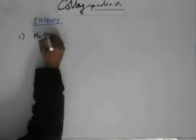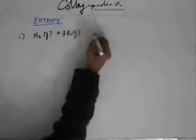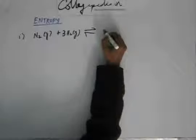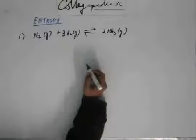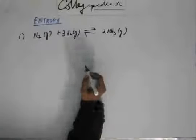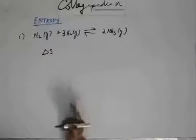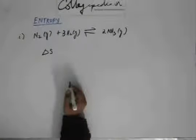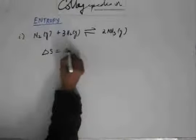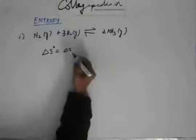Suppose we have the reaction: N₂(g) + 3H₂(g) → 2NH₃(g). This is the very important and famous reaction for the preparation of ammonia — this is how ammonia gas is prepared. Suppose we are asked to calculate the change in entropy for this particular reaction. In this kind of reaction, we need to calculate the change in entropy.